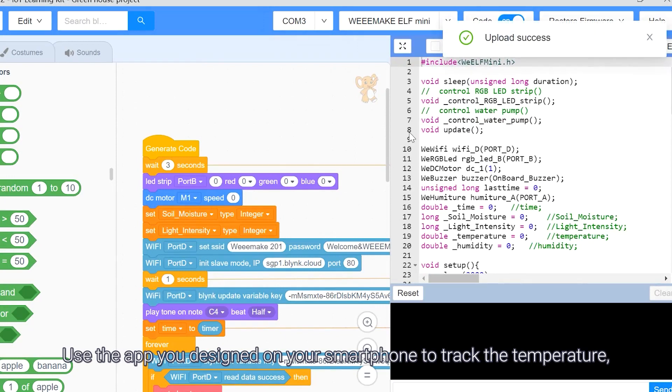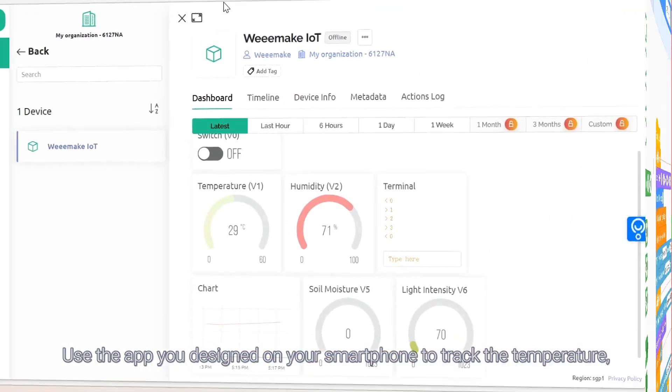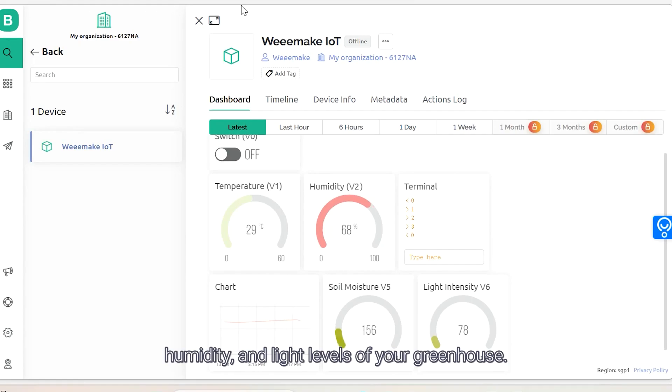Use the app you designed on your smartphone to track the temperature, humidity, and light levels of your greenhouse.